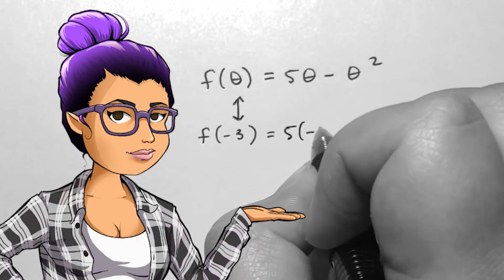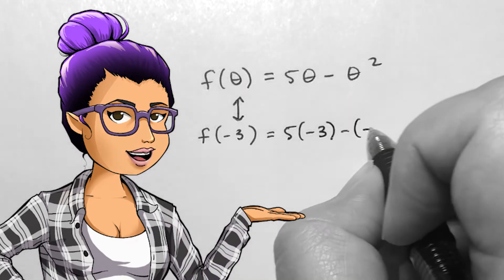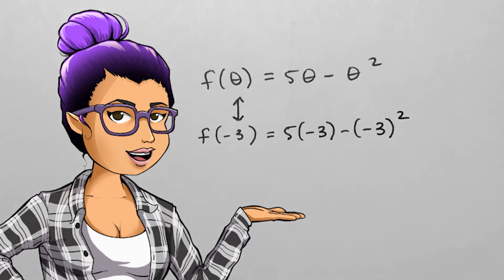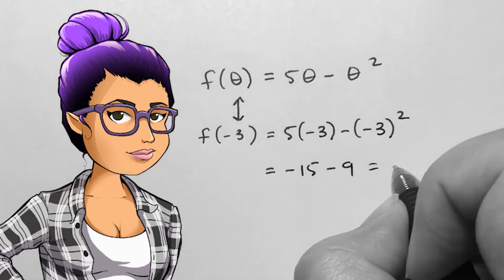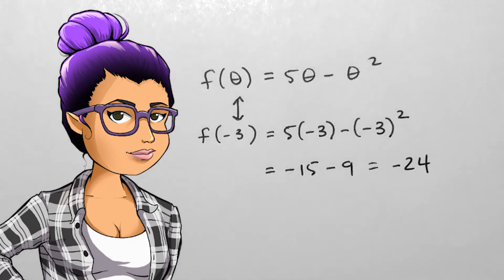so it should replace theta everywhere else. I can set up f of negative 3 equals 5 times negative 3 minus negative 3 squared. When I simplify and combine like terms, I get negative 24.